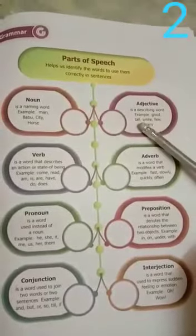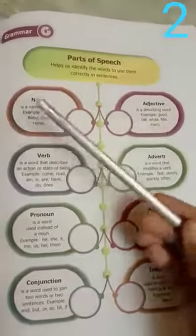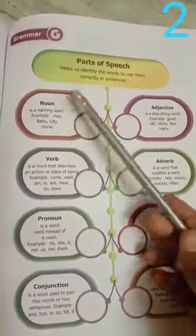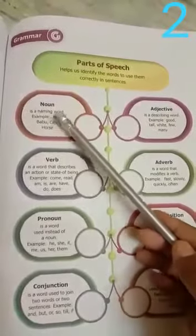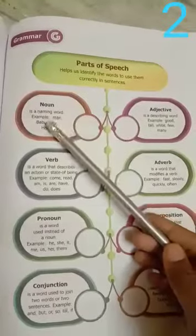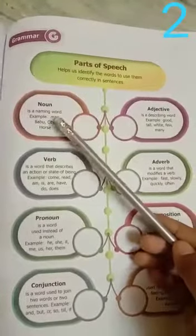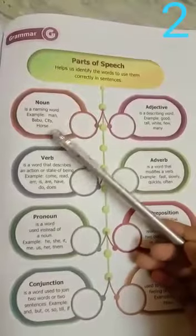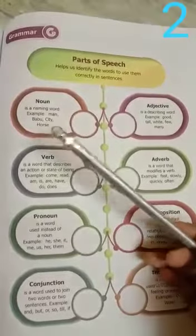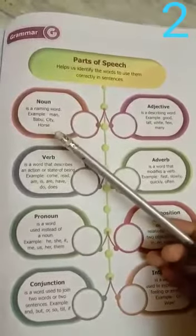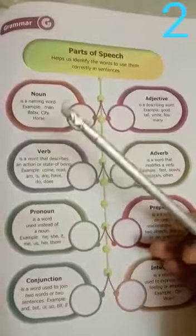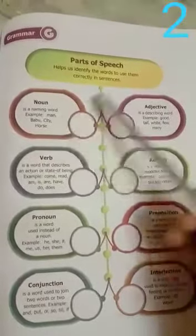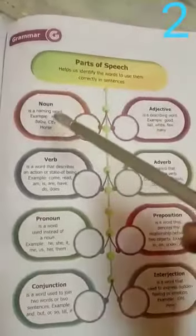Today we are going to see about noun. What is noun? It is a naming word. For example: man, Babu, city, horse, or whatever. It covers the name of a person, name of a place, name of a thing, and name of an animal. There are different types of noun.